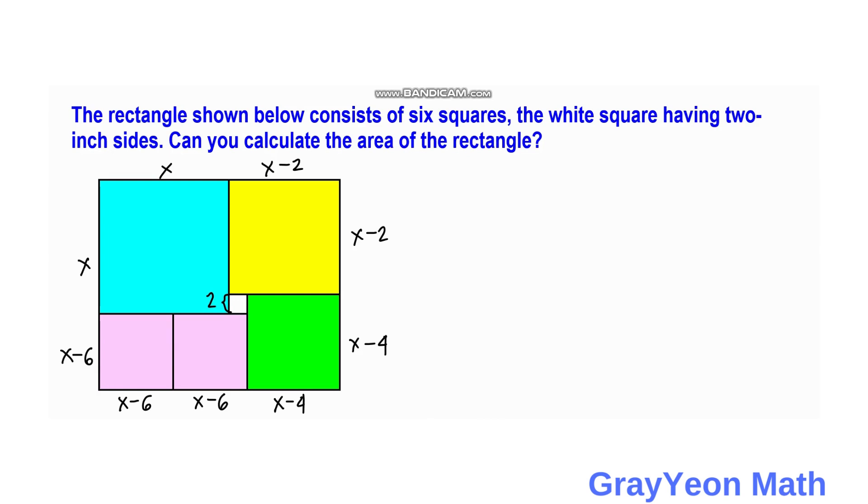Okay, so next thing that we have to do is we need to equate the two sides, the upper length and the lower length. So for the lower length we have x minus six